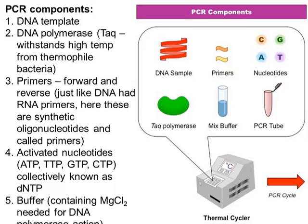The DNA polymerase used in PCR comes from thermophilic bacteria because it tolerates high temperatures. We also use primers — if we remember DNA replication, there is something called an RNA primer, but here in PCR I use DNA primers to make amplification of the target gene.